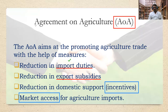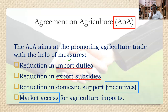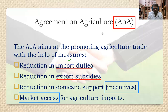All four clauses of the AOA — reduction in import duties, reduction in export subsidies, reduction in domestic support, and market access — play both positive and negative roles depending on the situation. For exam purposes, if asked to write a short note on Agreement on Agriculture, explain what agriculture is, what agricultural products are, what AOA is, and then explain these four points with both positive and negative implications. With this, we complete the topic and move on to the third module.